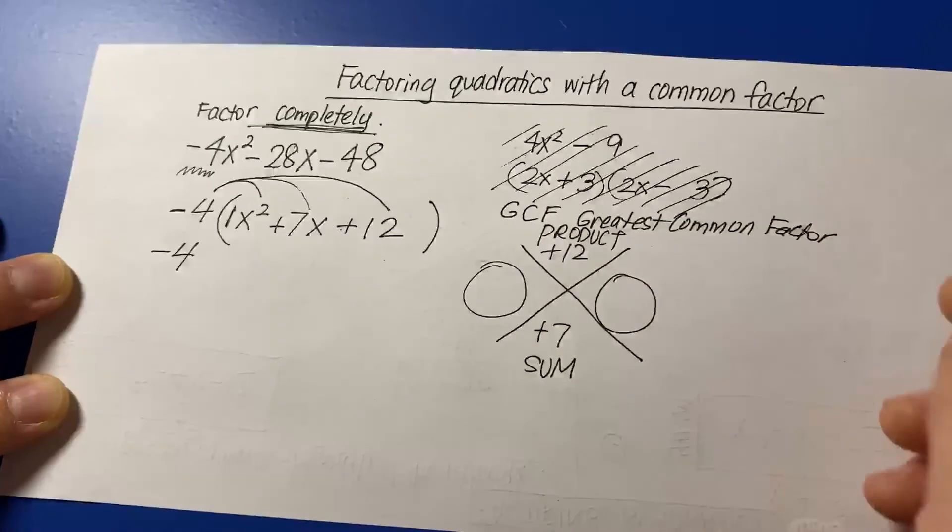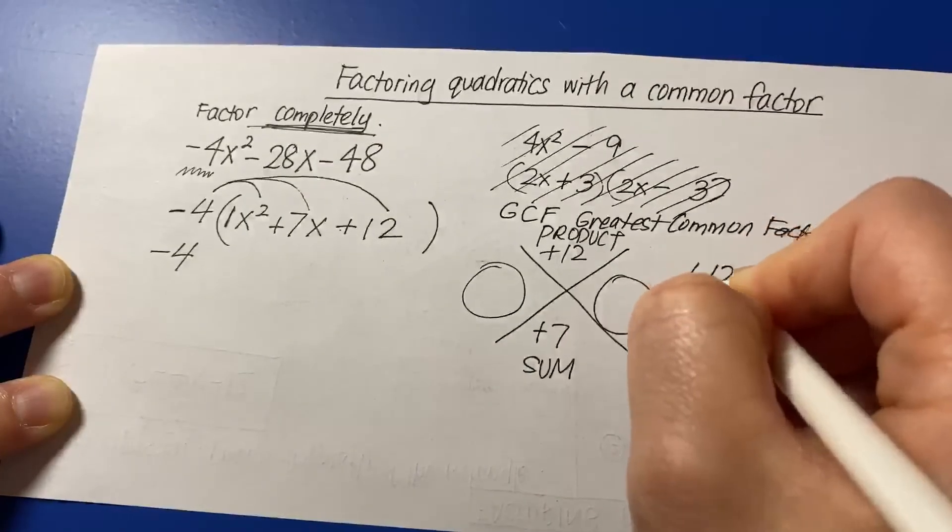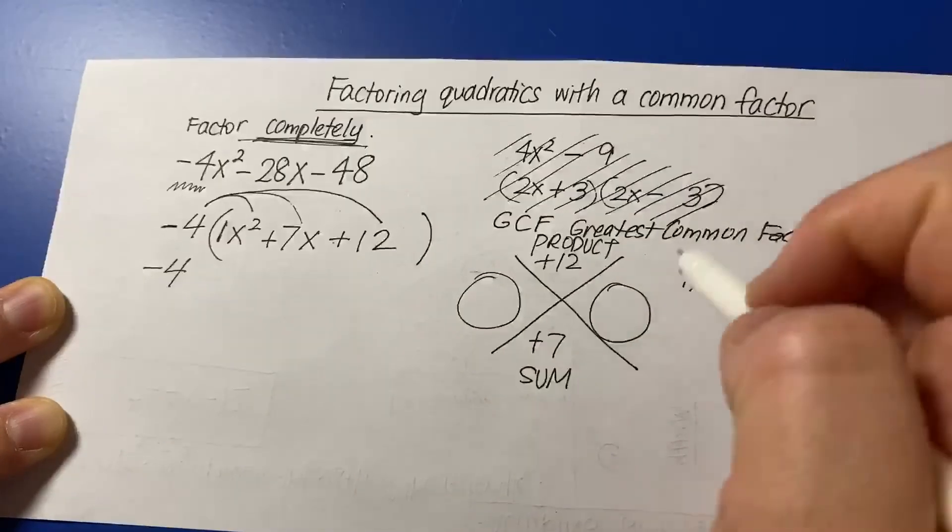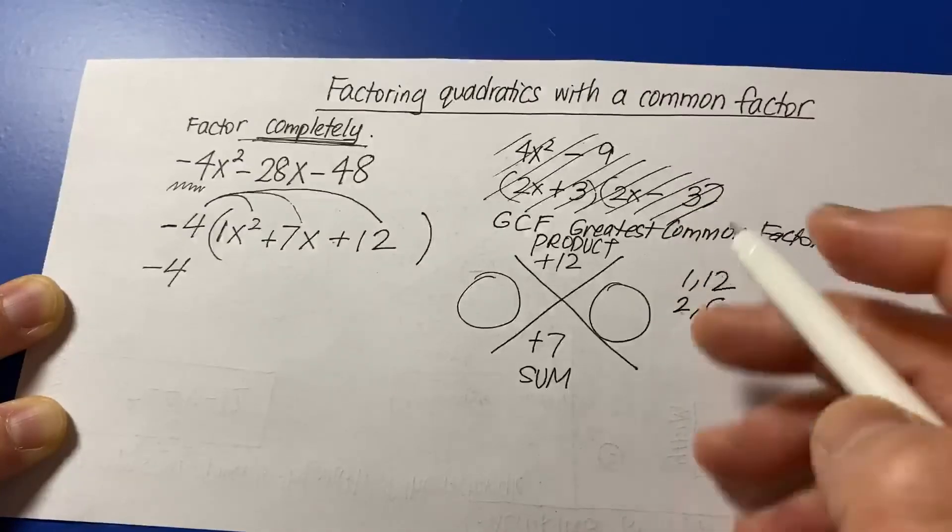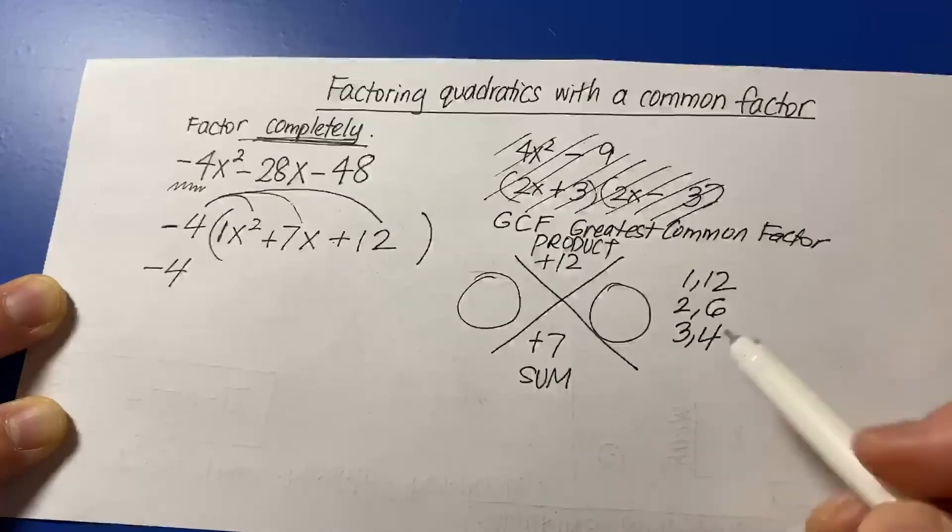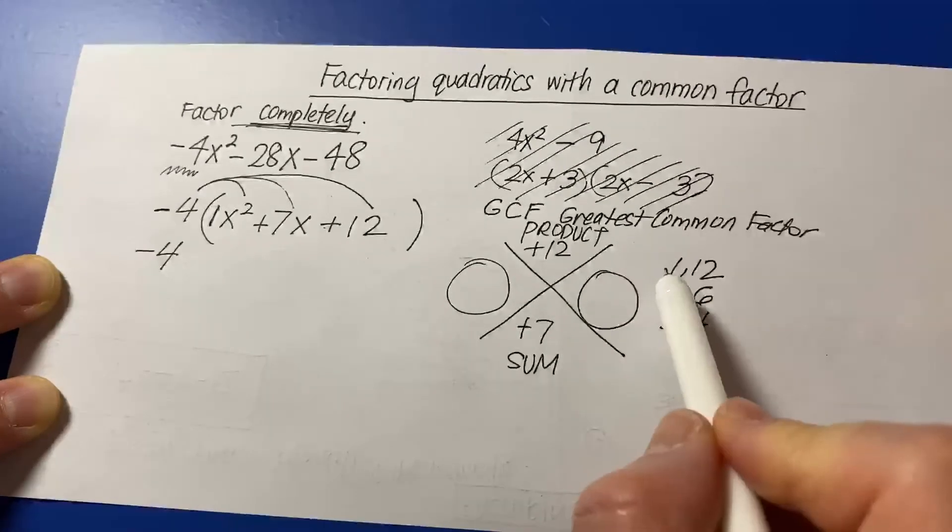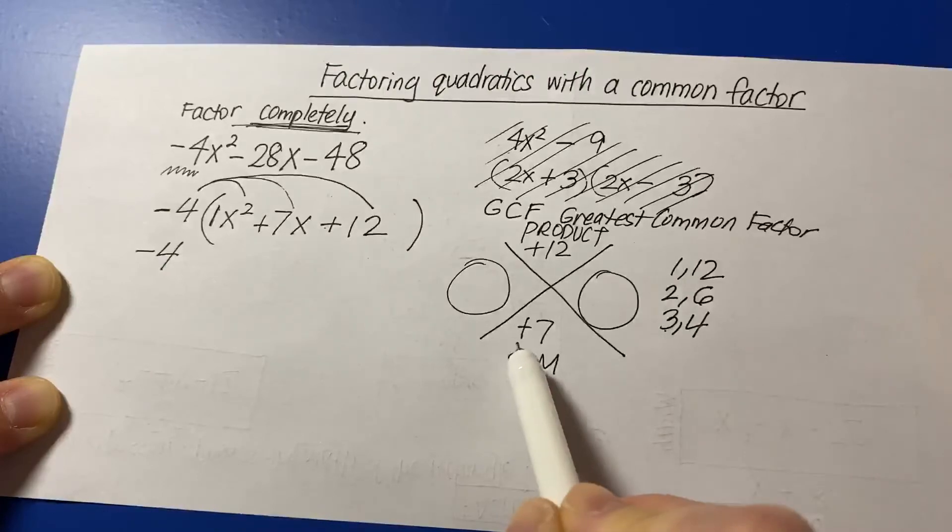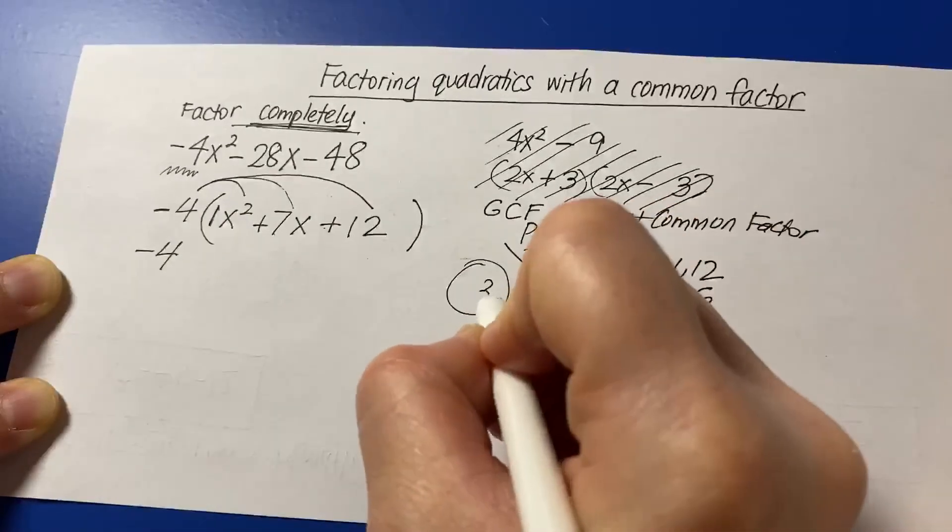So we're going to list our factors that multiply to give us 12, starting from 1. 1 times 12. After 1, that would be 2. 2 times 6. After 2, that's 3. 3 times 4. And after 3 is 4, and then the list goes up. Now, which of these pairs adds or subtracts to give me that 7? And the only choice would be 3 and 4.